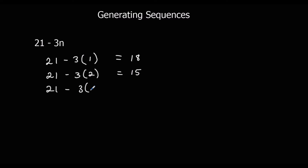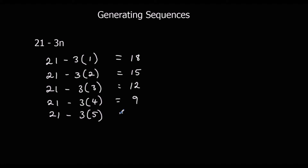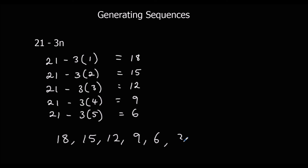21 minus 3 times 3: 21 minus 9 is 12. 21 minus 3 times 4 for the 4th term: 21 minus 12 is 9. 21 minus 3 times 5: 21 minus 15 is 6. So the first terms of this sequence are 18, 15, 12, 9, 6. And it will keep going down in 3s: 3, 0, minus 3, and so on.